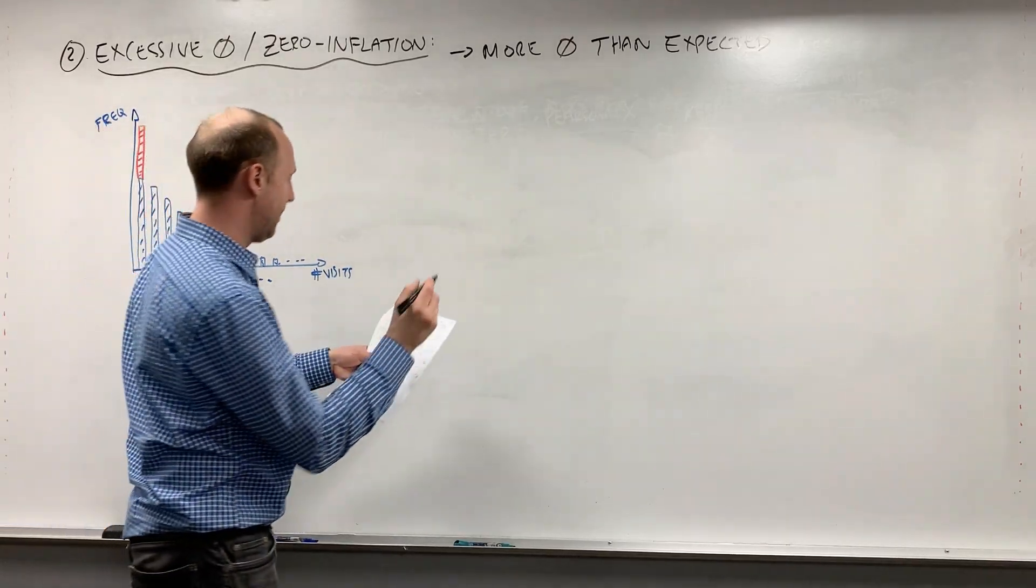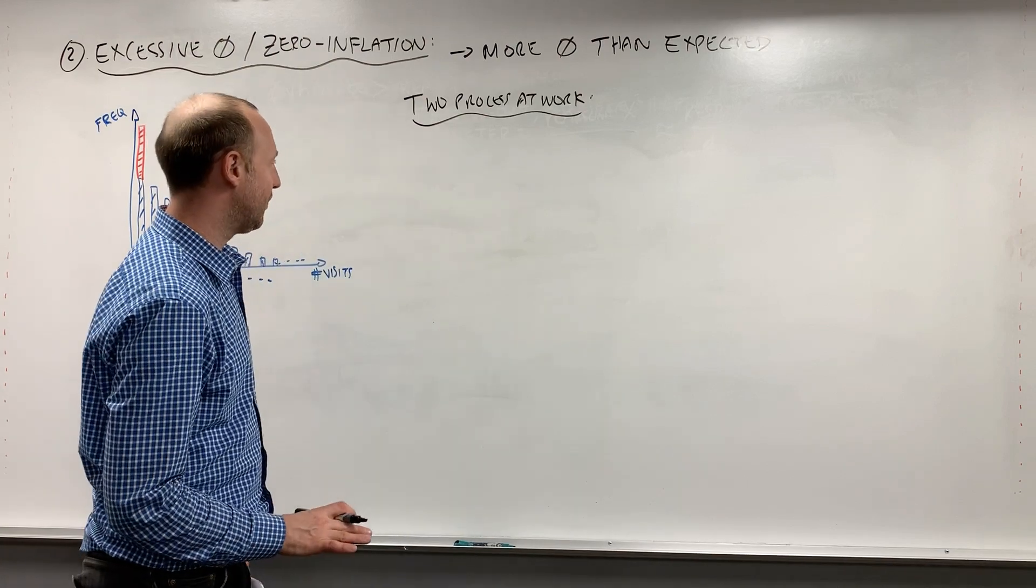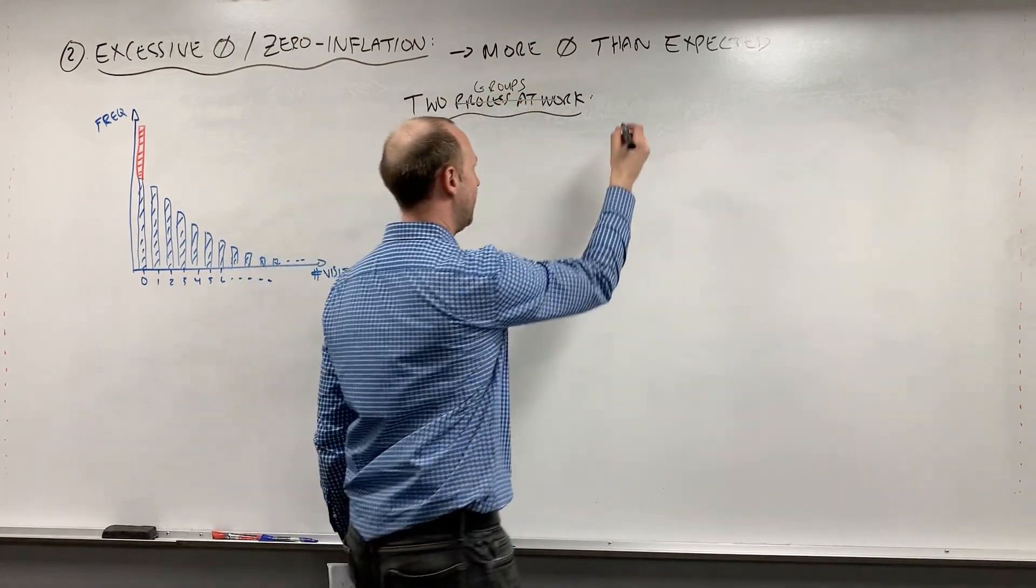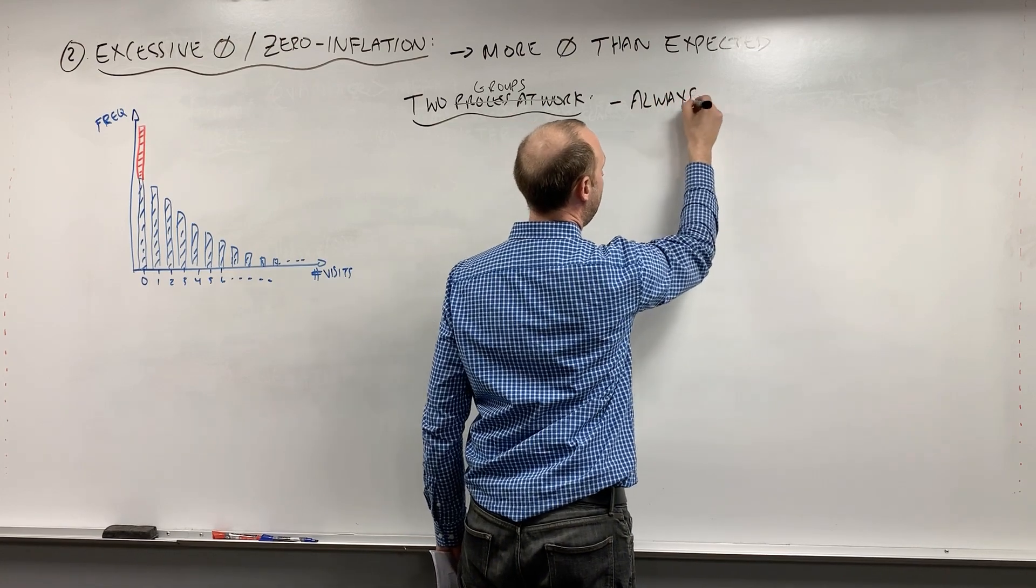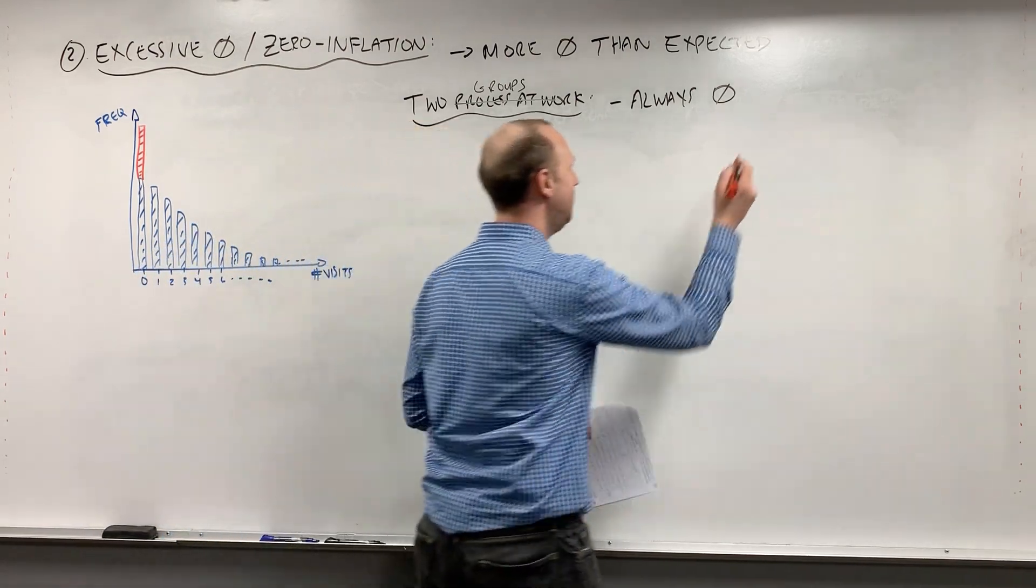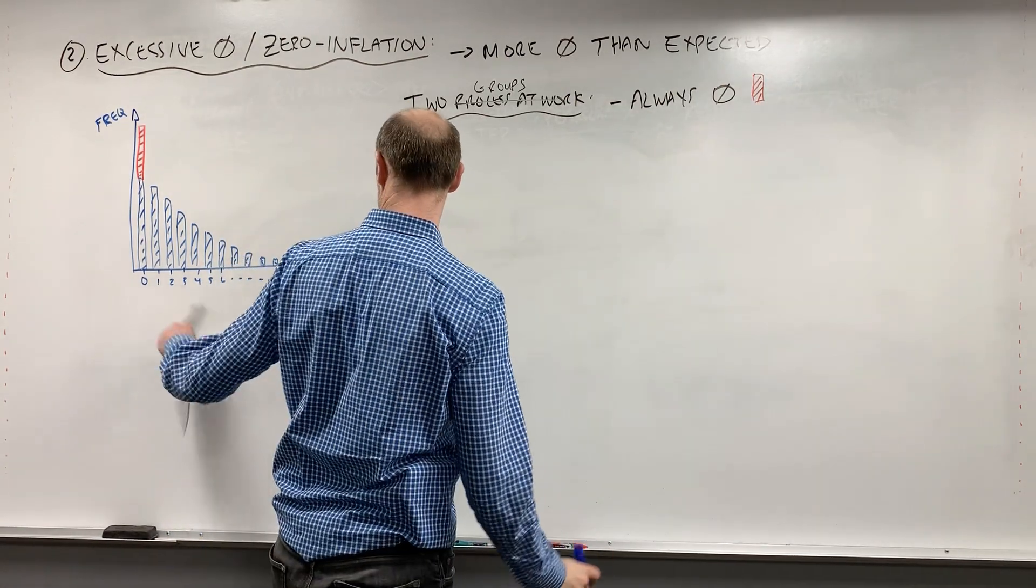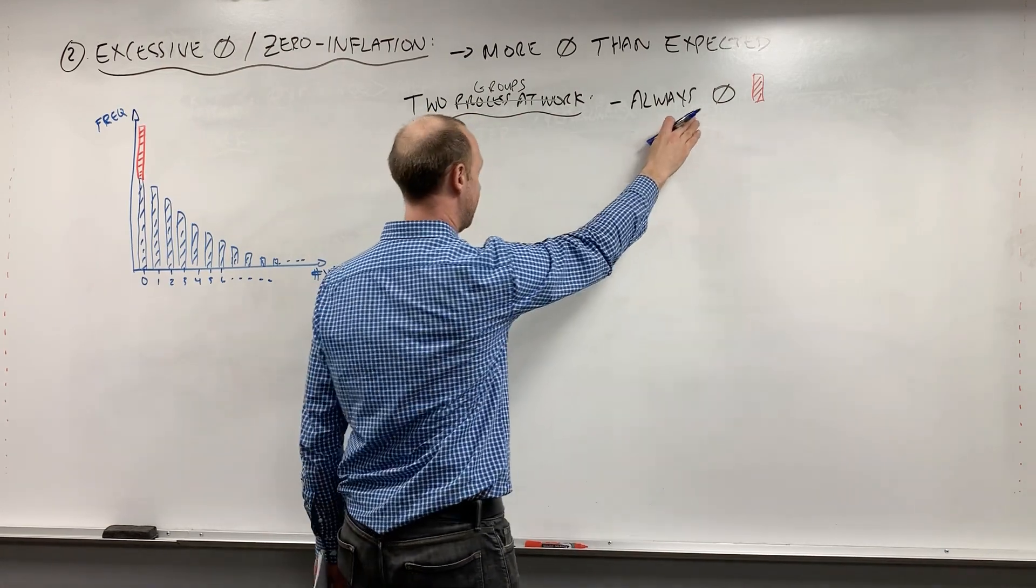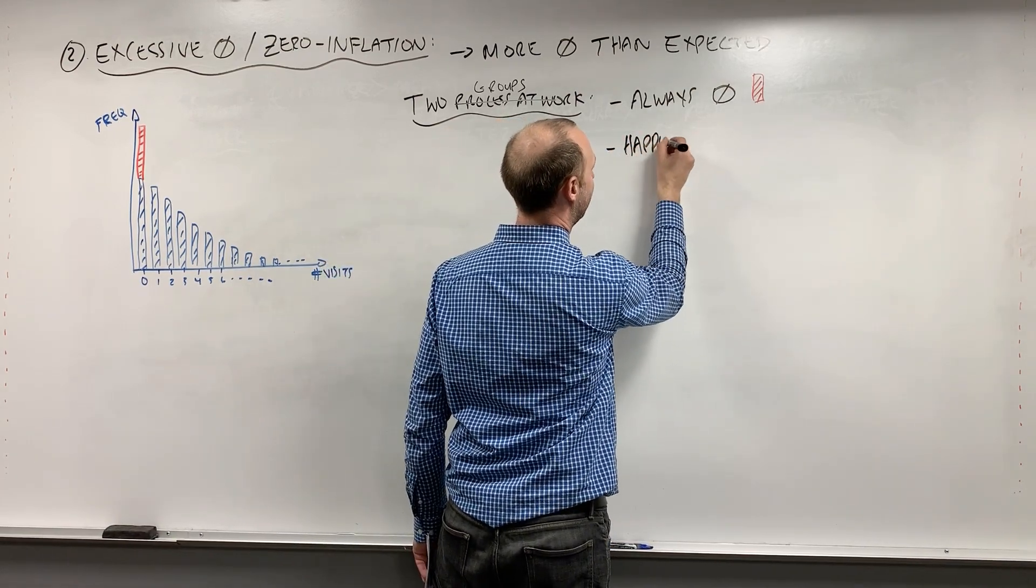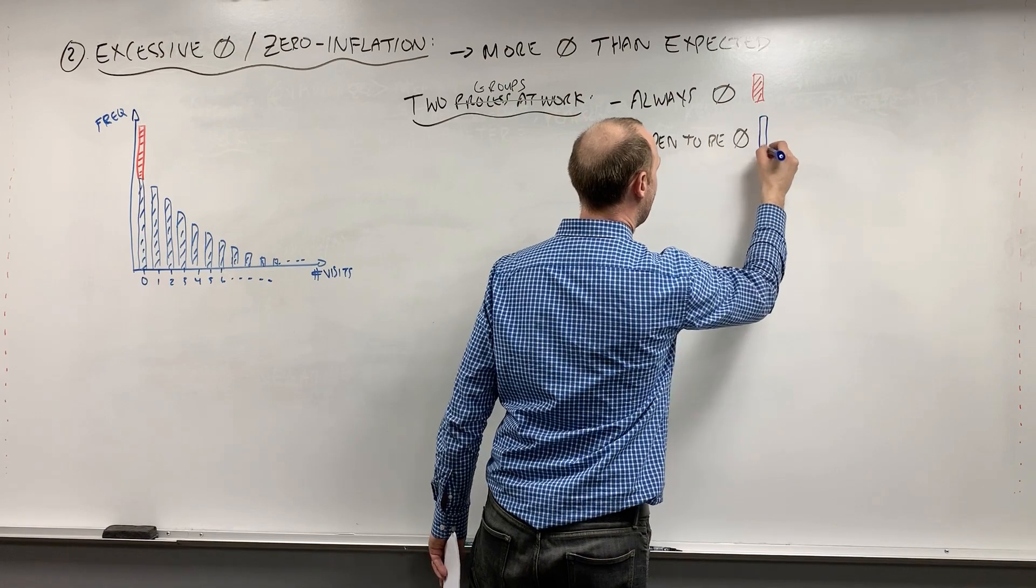A common reason for seeing this is that there's two processes at work. Let me try saying that a different way. There's generally two kind of groups we can think of. There's the always zeros, is what I'm going to call them, to give them a non-technical name. And the always zeros are what I've put in on this histogram bar plot of the number of visits. So the red part are the always zeros, and the happen to be zeros.